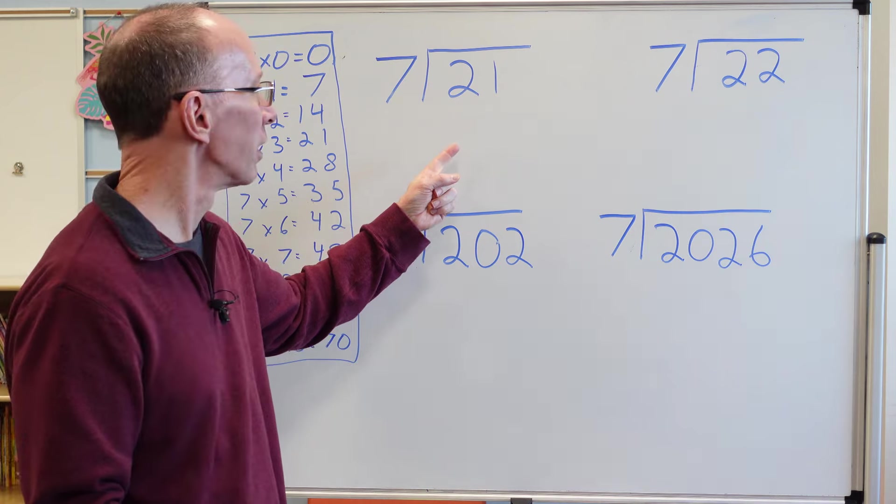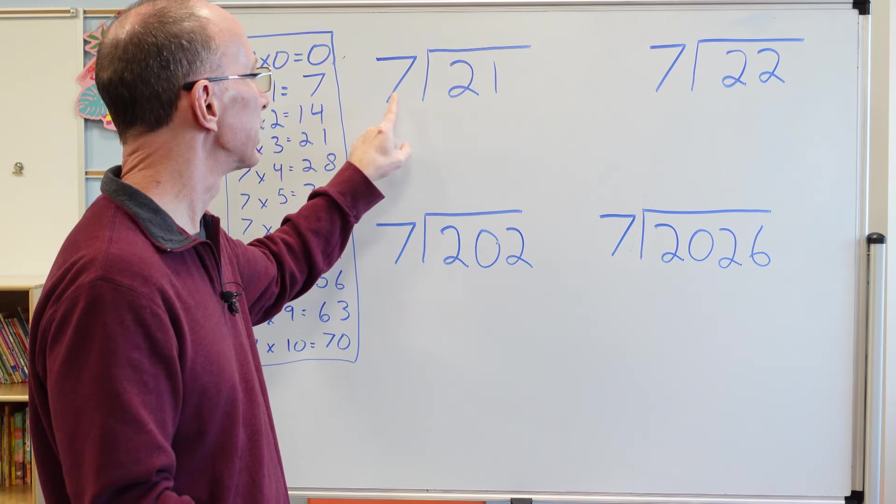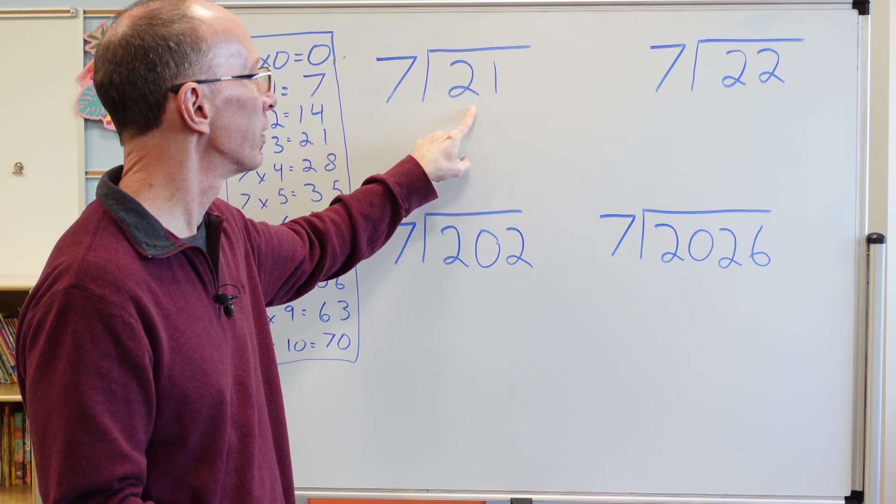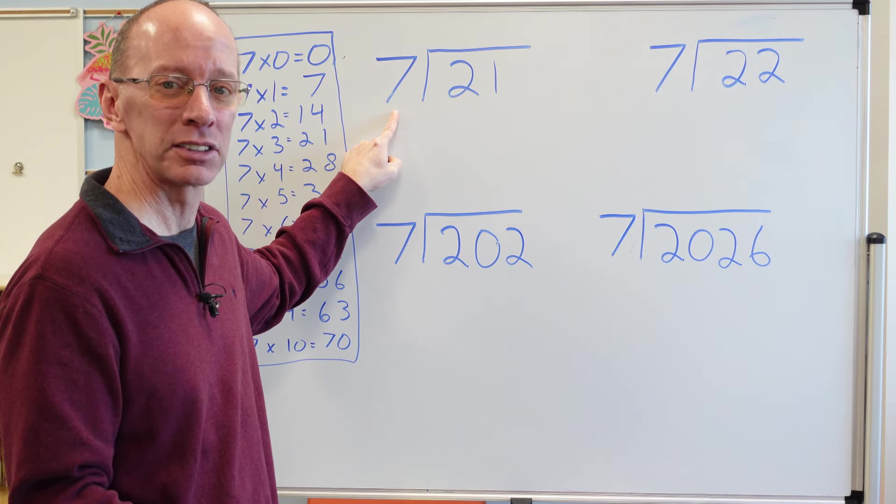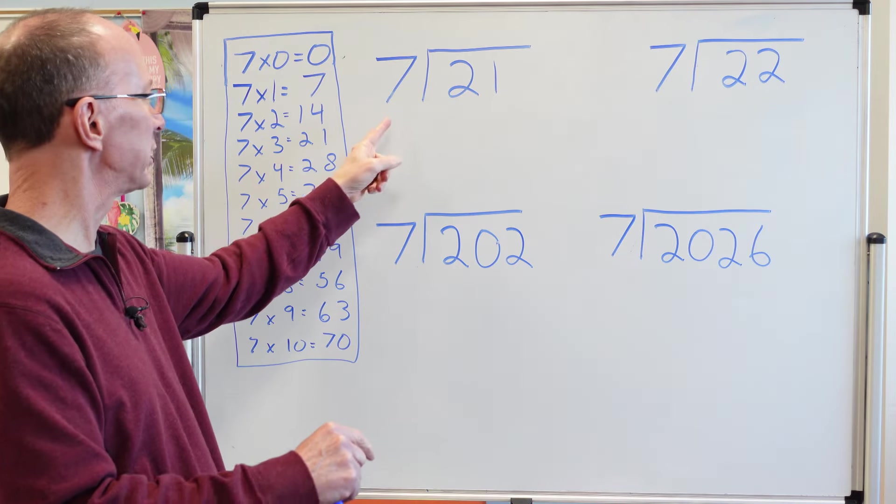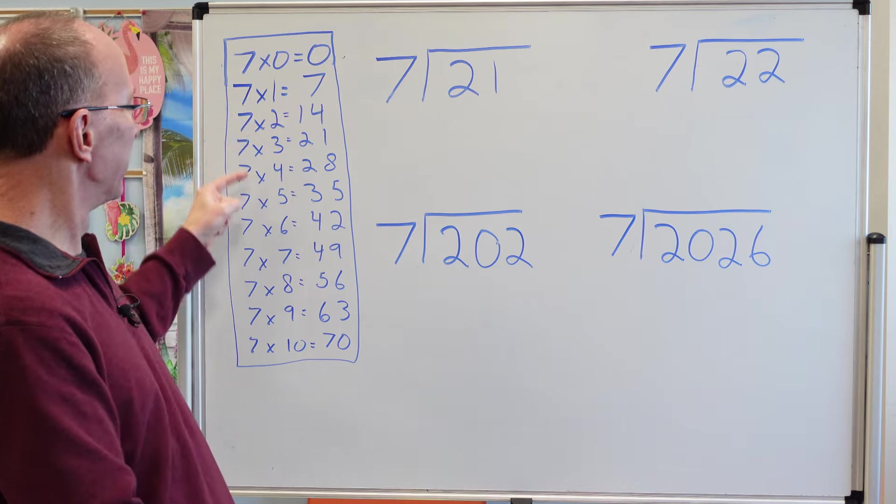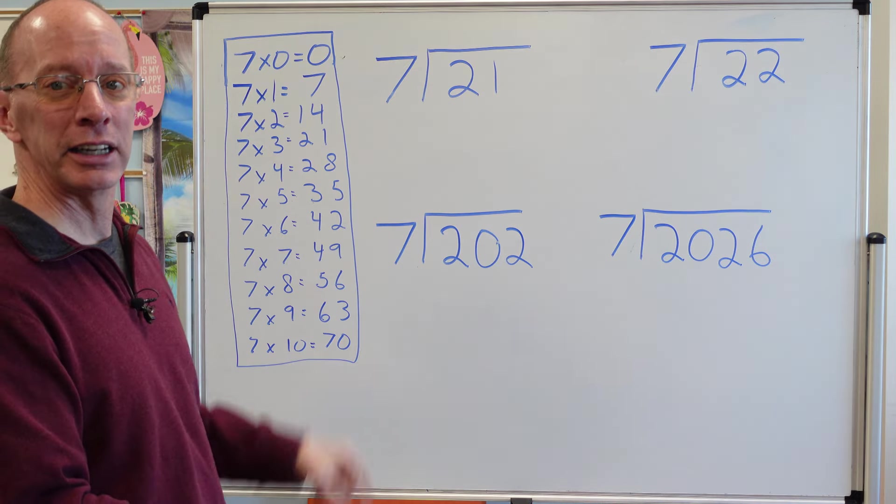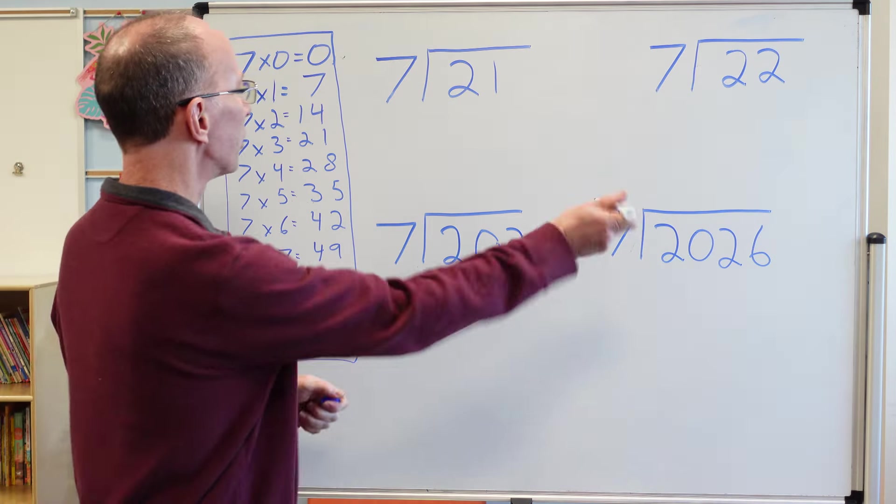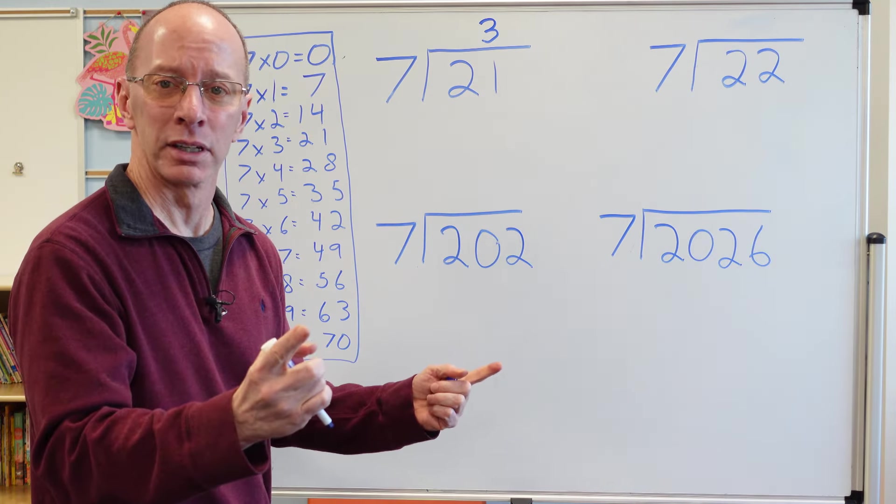Here's the first problem we're going to do. So I have 21. This is the number I need to do the dividing. So I need to divide 21 by this number here, seven. All right, so this one's kind of easy, cheesy, lemon squeezy. So how many times do I put seven into 21? Right here, seven times three equals 21. So I'm just going to go ahead and put three right there. Simple enough.